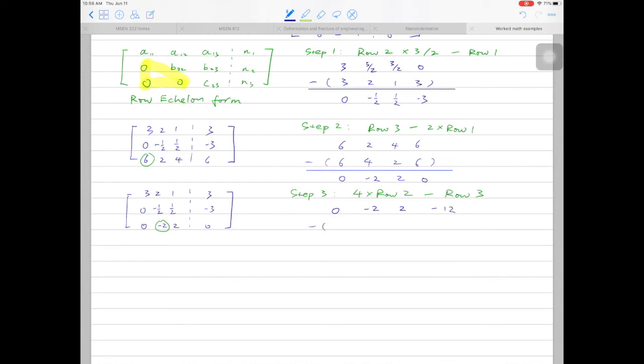For row 3, that's 0, minus 2, 2, and 0. During the subtraction, we have 0, 0, 0, and minus 12. The new matrix we have will be something like this.